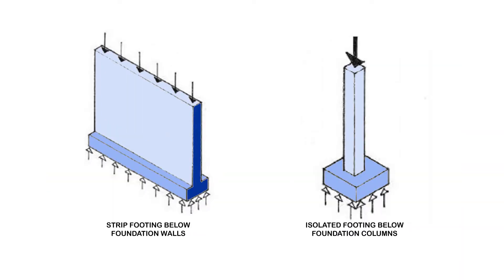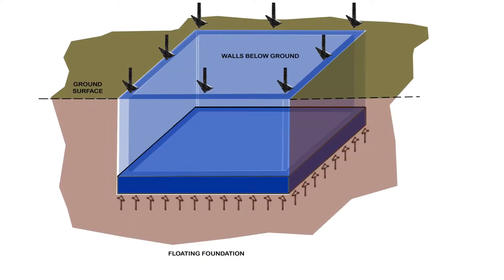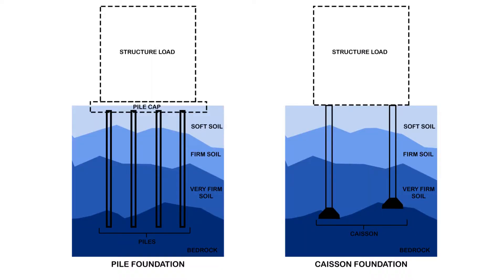So far we have seen a few shallow foundation examples: the strip footings under the walls, the isolated footings under the columns, and then the mat or raft foundation — basically a heavily reinforced concrete slab near the surface of the ground. The floating foundation depth will depend on how far it goes into the soil. Now let's move on to deep foundations, where we have two main types.